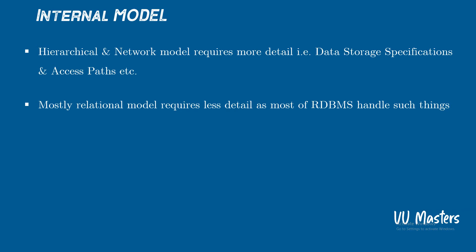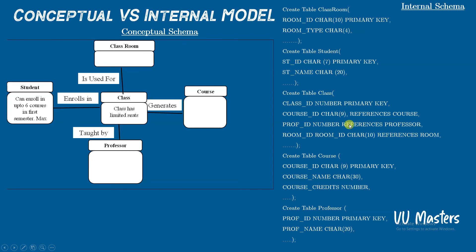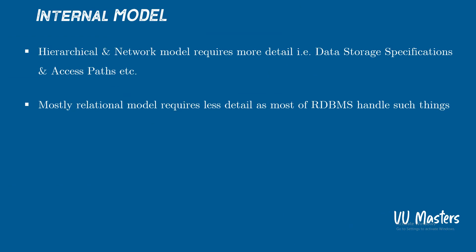As relational database management, we have selected the relational data model. We said relational database will be used. Hierarchical and network models require more detail, such as data storage specification and access paths. In hierarchical and network models we have to define data and also access paths. That is why we use the relational model. Relational model requires less detail, as most RDBMS handle that internally. With the relational data model we have less detail needed — no manual data storage specification — because the RDBMS handles all those details.